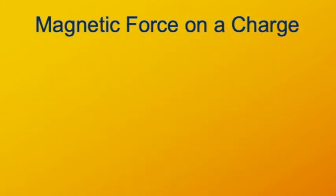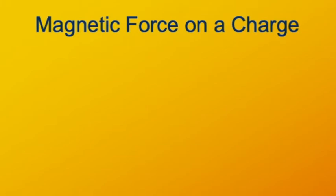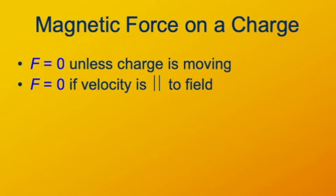Let's characterize this magnetic force based on what we know about cross products. Since the vector QV is one of the vectors in this cross product, if it's zero — if the charge is not moving — then the force is going to be zero as well. Furthermore, a cross product is zero if the two vectors are parallel or anti-parallel, so if the charge is moving parallel or anti-parallel to the field, the force is going to be zero.